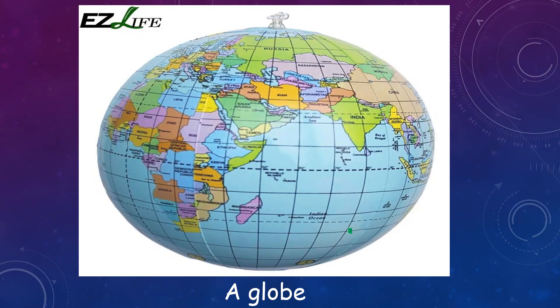Latitudes and longitudes are the two types of imaginary lines.